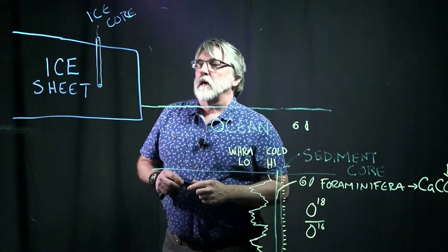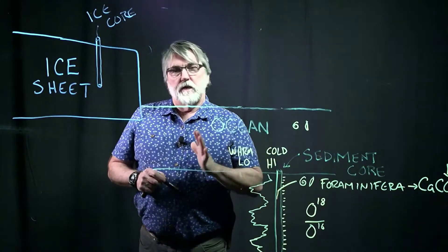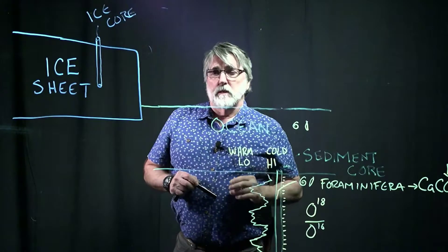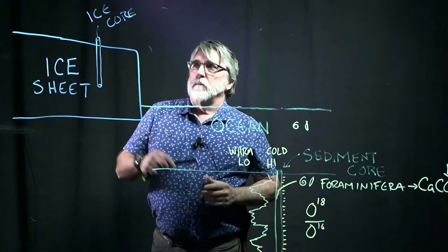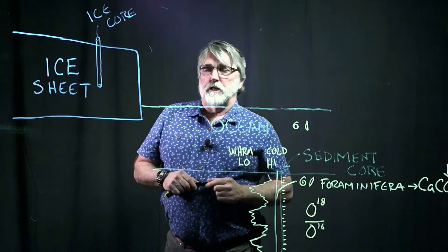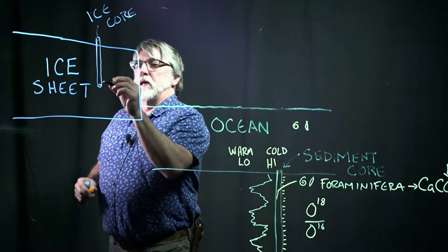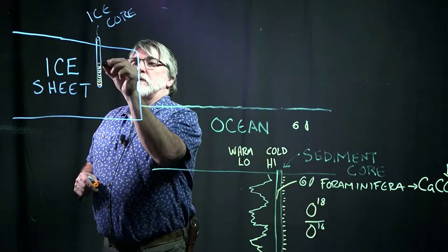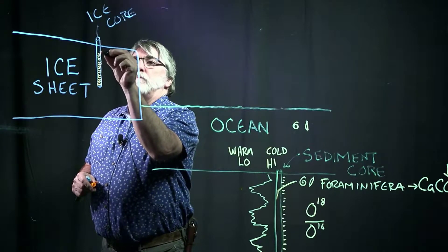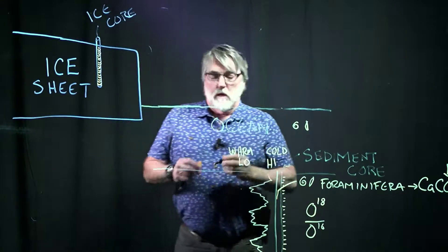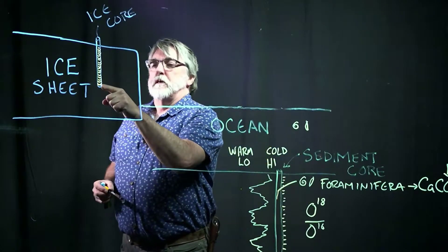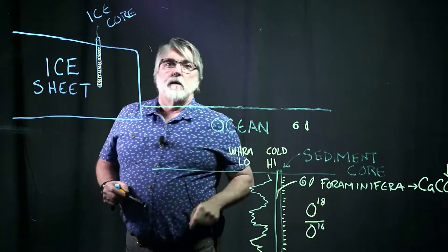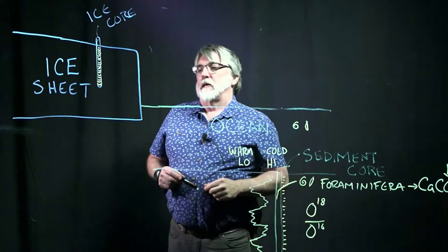Ice cores are really effective for giving us the more recent, like say last 2 million years of climate change data. Because ice accumulates as layers, and those layers have bubbles in them, and those bubbles are representative of the atmosphere at the time the ice was forming.